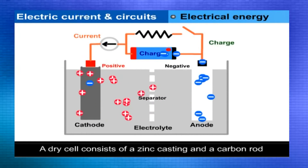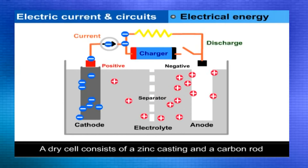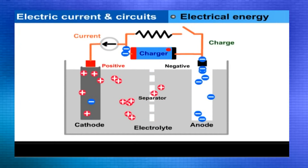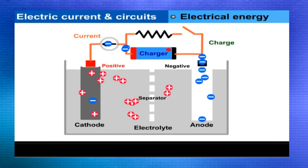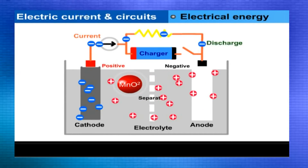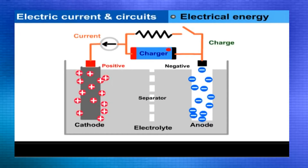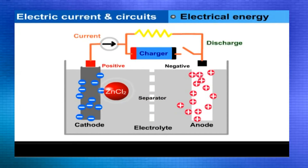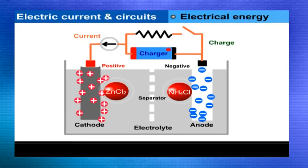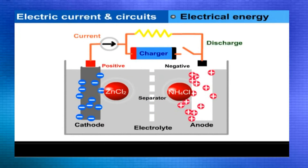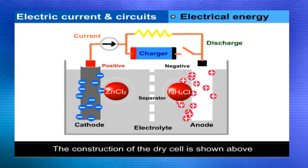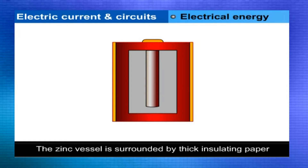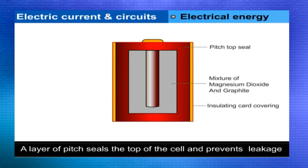Chemical energy into electrical energy. A dry cell consists of a zinc casing and a carbon rod with a brass cap at its centre. The carbon rod is surrounded with a black powder which is a mixture of manganese dioxide (MnO₂) and graphite (C). This black powder is contained in a thin bag of cloth or surrounded by a thin layer of sawdust. The space between the zinc casing and the sawdust is filled with a thick paste of ammonium chloride (NH₄Cl). The zinc vessel is surrounded by thick insulating paper.